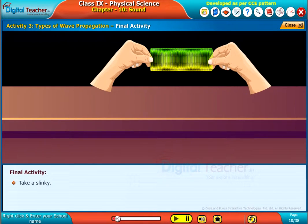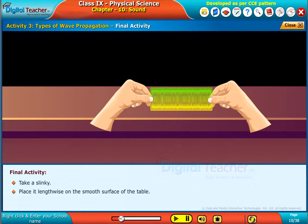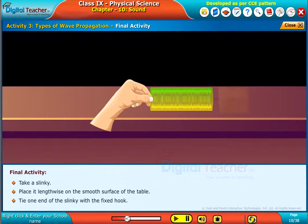Take a slinky. Place it lengthwise on the smooth surface of the table. Tie one end of the slinky with a fixed hook.